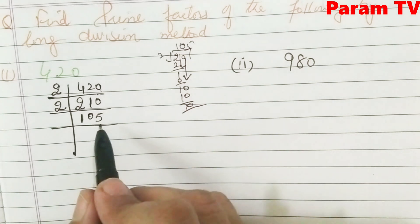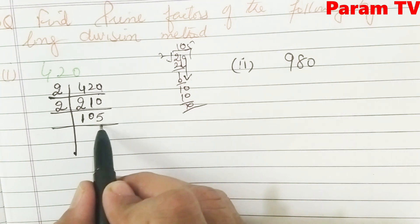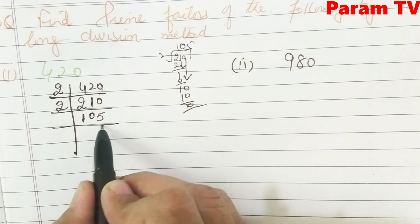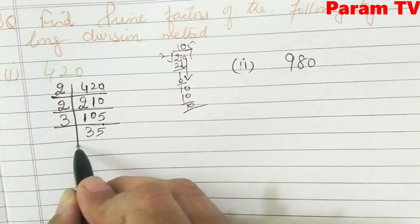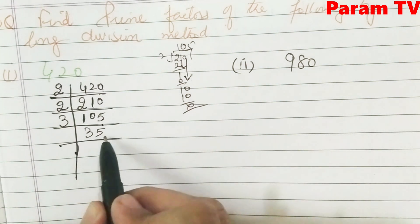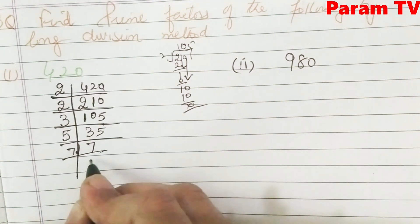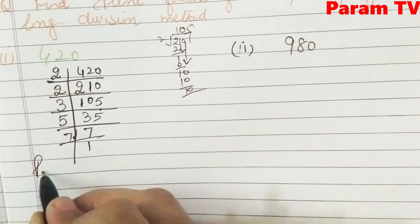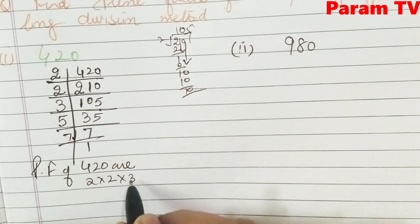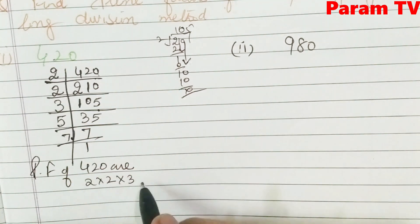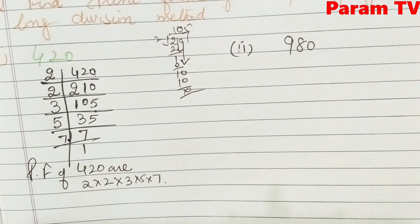You should check exercise 3.2 first where divisibility tests are fully explained. The prime factors of 420 are 2 × 2 × 3 × 5 × 7. These are the prime factors of 420.